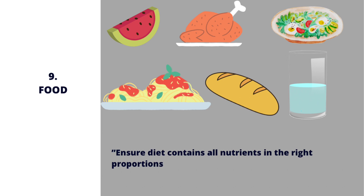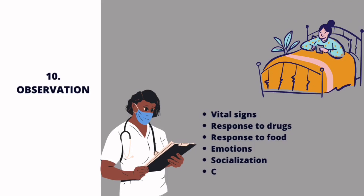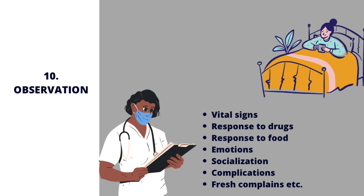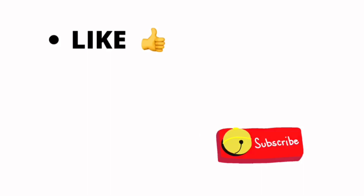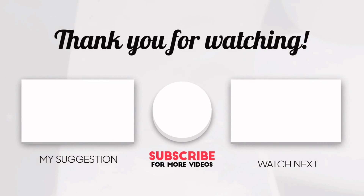Finally, we have observation. You need to continuously observe your patient — checking vital signs, inputs and outputs, the patient's response to drugs and foods, her emotions, how she socializes, the things she says, and whether there are any complications from surgery or any fresh complaints. Ensure all your observations are backed by evidence and not just your own intuition as a nurse. These are the 10 concepts of Florence Nightingale's Environmental Theory. Please like, drop a comment, and share with your friends so we can reach other nursing students who would need this video. Don't forget to subscribe and I'll see you in my next video. Bye!